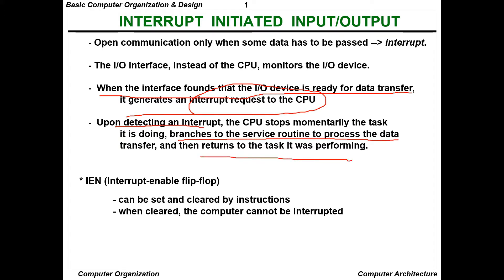The CPU then returns to the task it was performing. An interrupt is like an abrupt stop — upon detecting an interrupt, the CPU stops momentarily the task it is doing, branches to the service routine to process the data transfer, and then returns to the task it was performing.